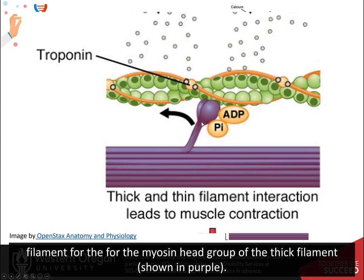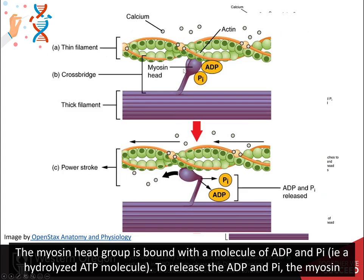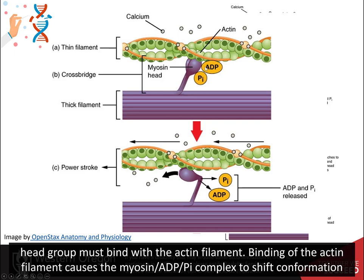The myosin head group is bound with a molecule of ADP and inorganic phosphate, or a hydrolyzed ATP molecule. To release the ADP and Pi, the myosin head group must bind with the actin filament.